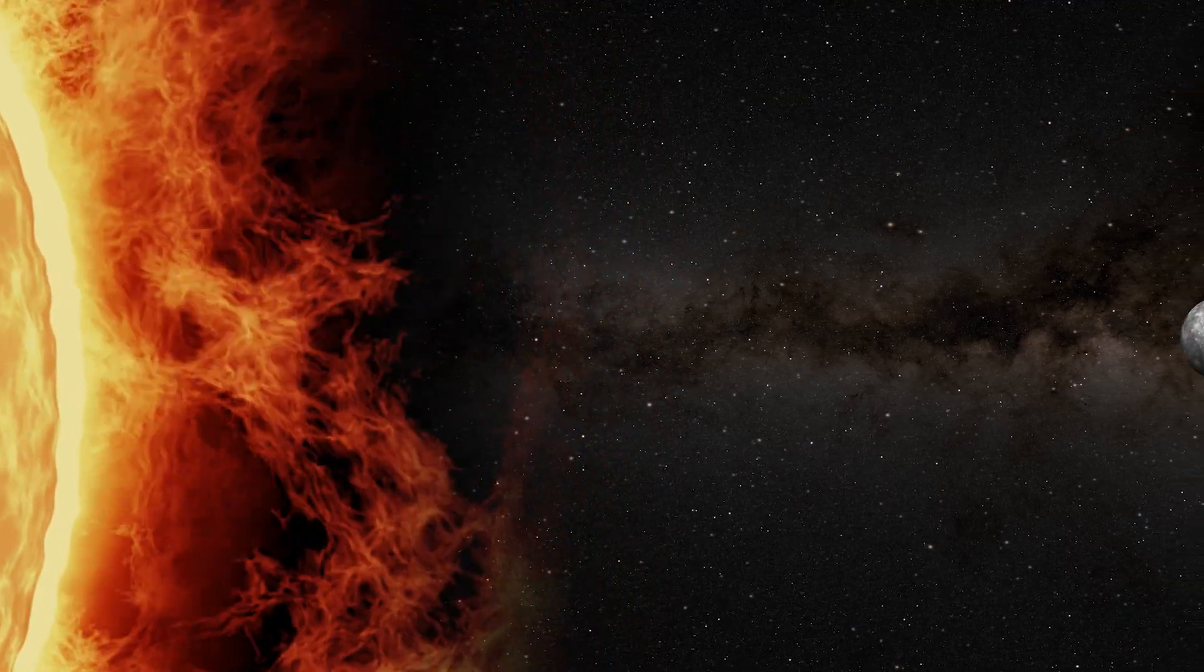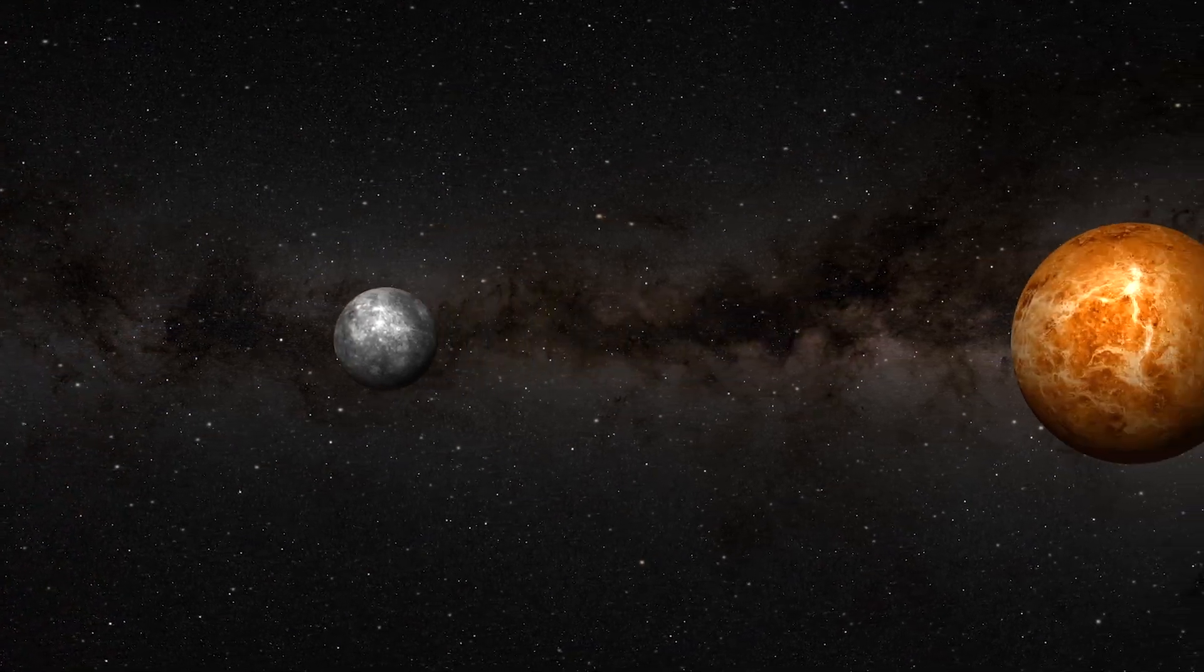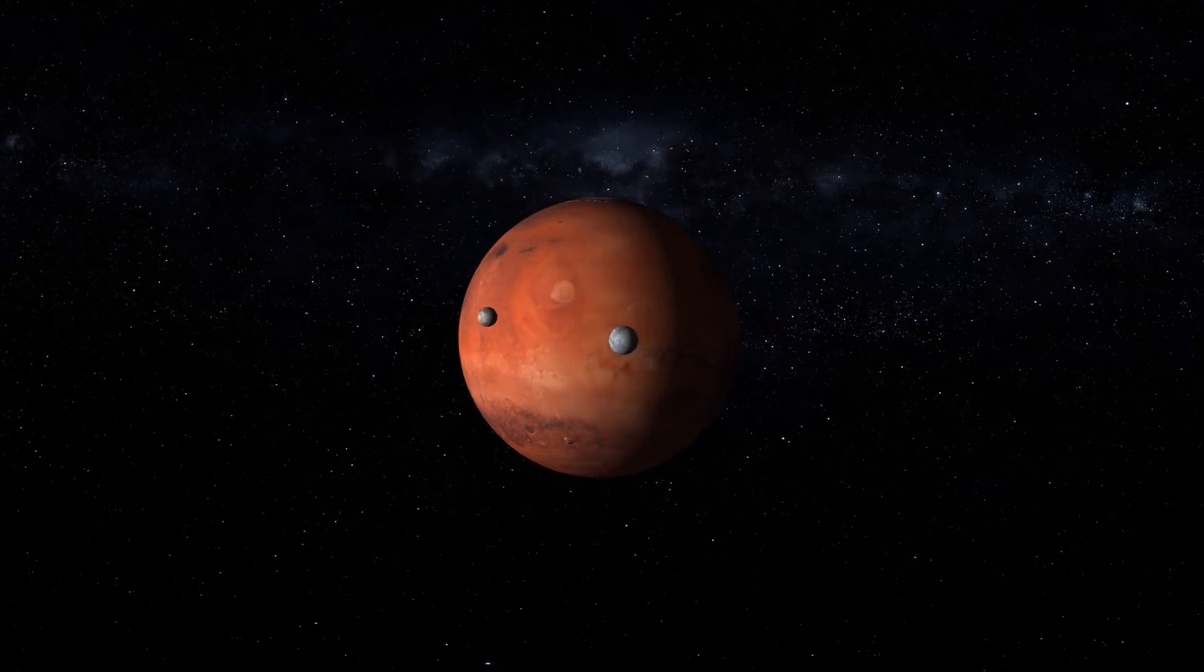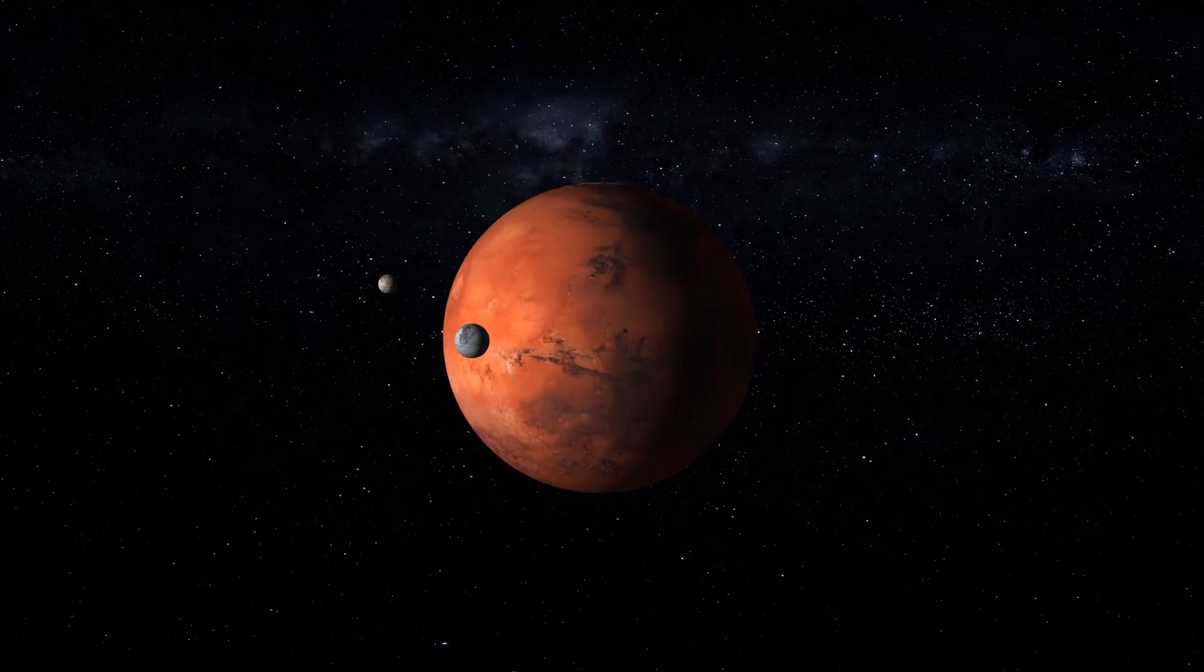Mercury and Venus, the two closest planets to the Sun, don't have any moons at all. When we look at the other planets, the numbers of moons they have can be quite astonishing. Mars, for example, has two moons.